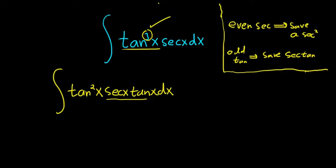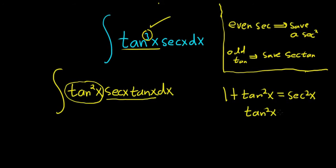Well, if you're saving a secant tangent, you'll notice that that's the derivative of secant, right? That's going to be the derivative of secant, so our u has to be the secant function. So we have to turn all of this into secants. So there is an identity. 1 plus tangent squared is equal to secant squared. That means that tangent squared x is equal to secant squared x minus 1.